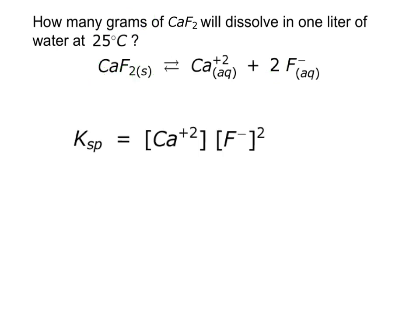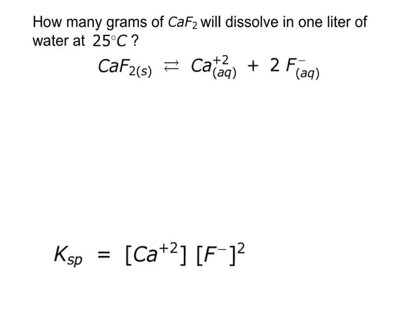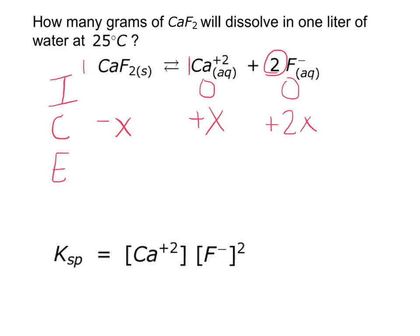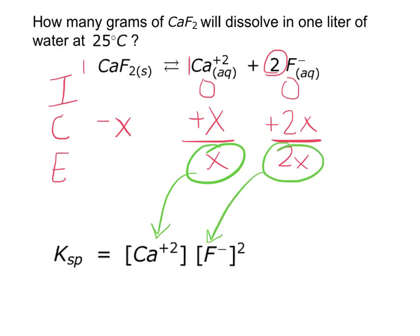Now that we have the Ksp expression, we need to write an ICE box. Initially, I have some amount of CaF₂ solid — but it doesn't matter how much — and 0 Ca²⁺ and 0 F⁻. The change: CaF₂ loses x from whatever it started with. Ca²⁺ gains that same x amount because of the 1-to-1 mole ratio, but F⁻ gains 2x because there's a 2 in front. So at equilibrium we have x and 2x, and when we plug into our equation we'll use x and 2x — applying the 2 both for the 2x and for the squared exponent.